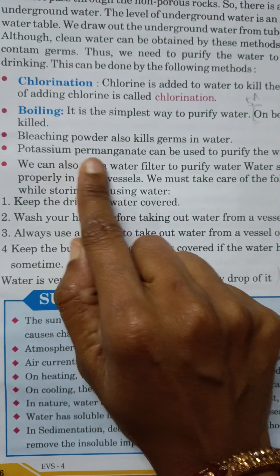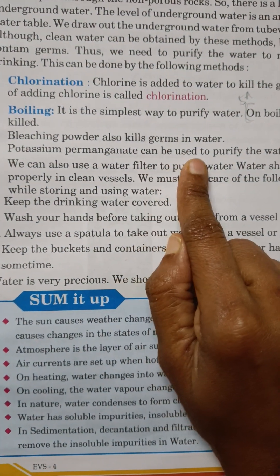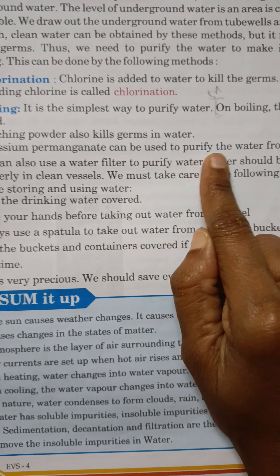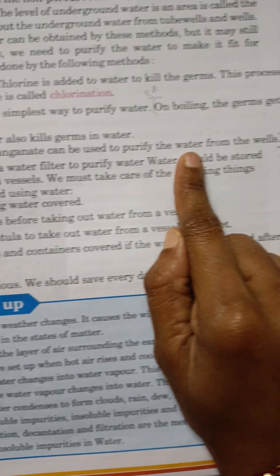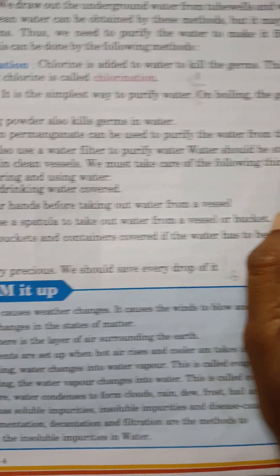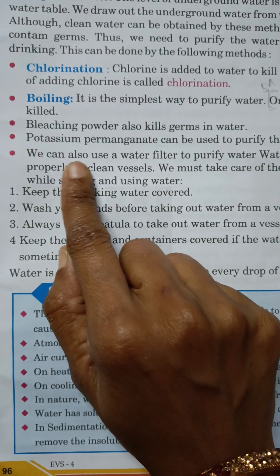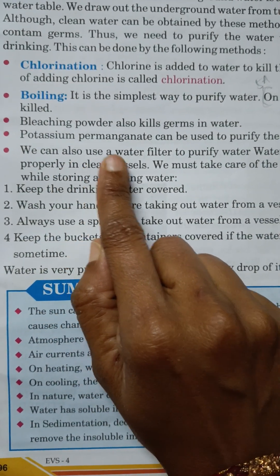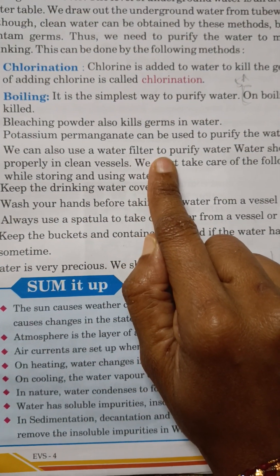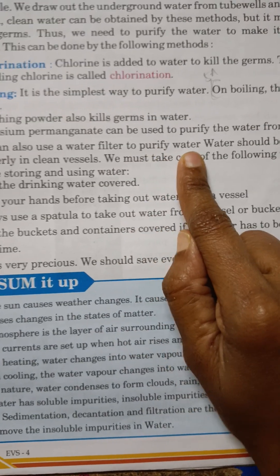Potassium permanganate can be used to purify the water from the wells. We can also use a water filter to purify water.